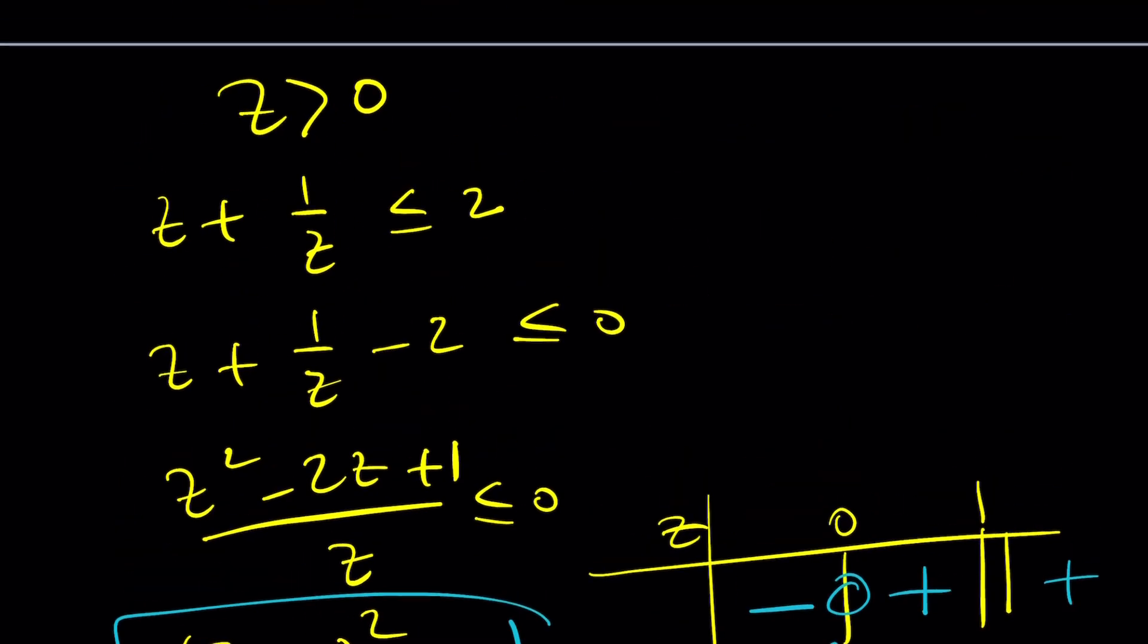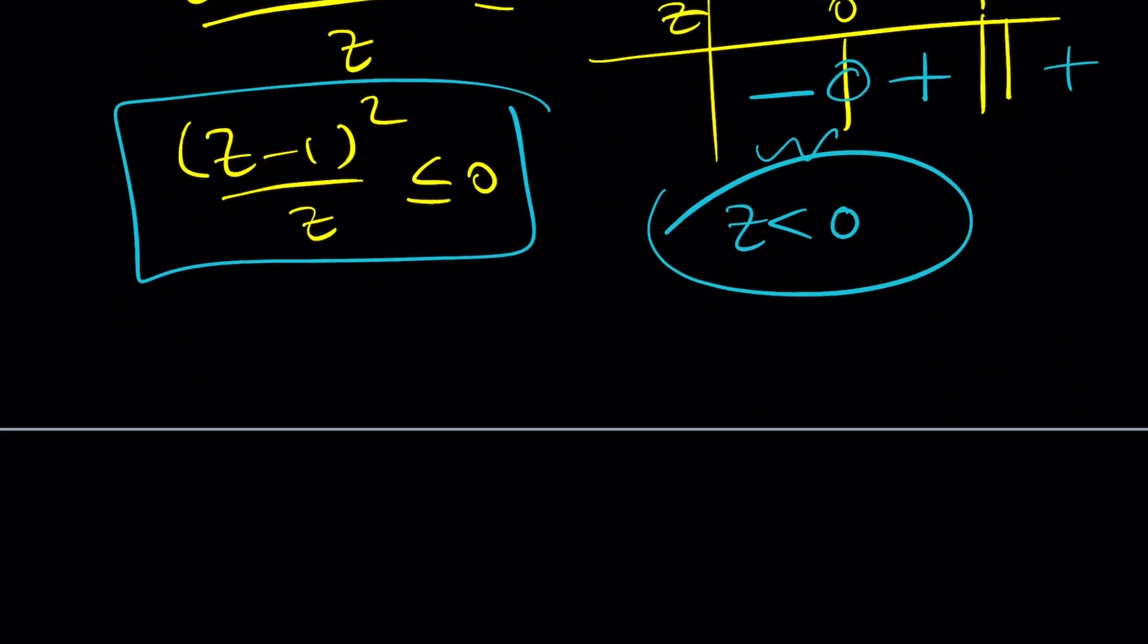So this means I want this interval, so z must be less than 0. That's interesting because first part gave me z is greater than 0. Second part gave me that. So if you put these two together, z is greater than 0 and z is less than 0. Wait a minute. Is that possible? No. It's not possible. Therefore, z cannot be real.